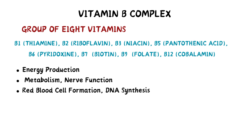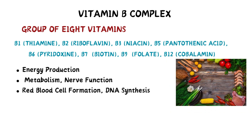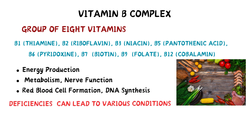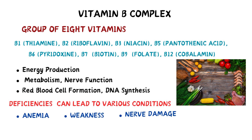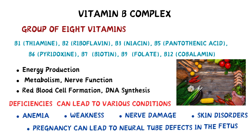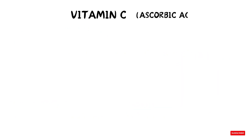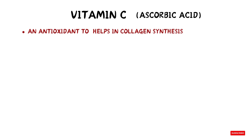Vitamin B complex is found in meat, eggs, almonds, avocados, fish, fortified grains, and more. Deficiencies in vitamin B can lead to various conditions like anemia, weakness, nerve damage, and skin disorders. During pregnancy, deficiency can lead to neural tube defects in the fetus. Vitamin C, also known as ascorbic acid, is an antioxidant that supports collagen synthesis, wound healing, and immune function.